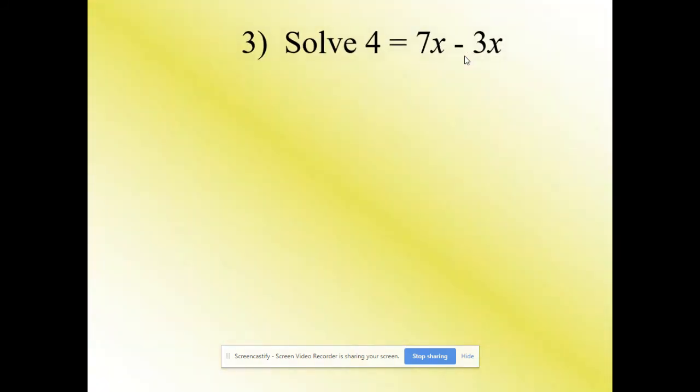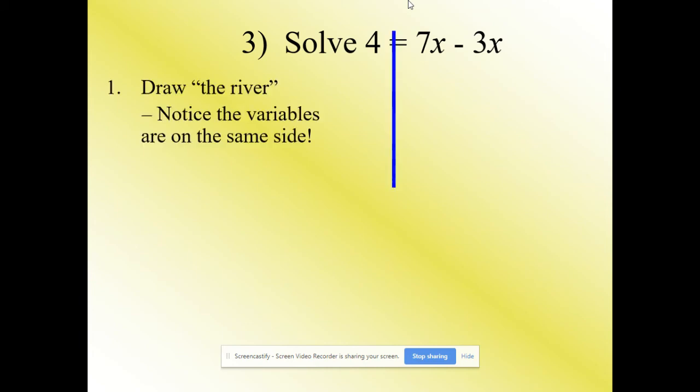So sometimes you're very lucky enough to have them already on that side. So with this one we'll start there and we draw the river. And then combine the like terms. So 7x take 3x will give you 4x. And then you can work it, it's on the opposite side than what you're used to but you can still do it.